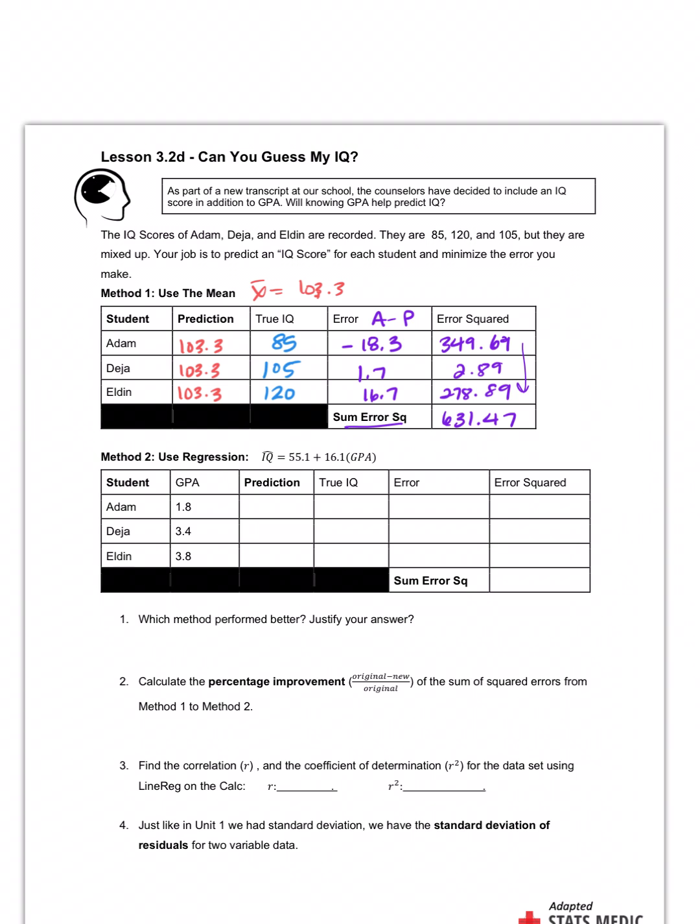Now let's try a different method. Say for some reason we have a regression line of their IQs and their GPAs. Somehow we got it. So we're going to see if we can use GPA as a predictor of the IQ. So if I plug in that GPA of 1.8 into this equation, what do I get? Well, the prediction comes out to be for Adam 84.08, for Deja it comes out to 109.84, and for Eldon it came out to 116.28. So we found those by plugging in the GPAs into that equation.